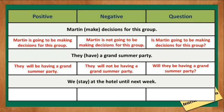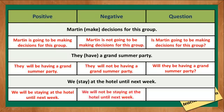The last one: 'We stay at the hotel until next week.' The verb is 'stay.' The correct positive statement is: 'We will be staying at the hotel until next week.' The negative statement is: 'We will not be staying at the hotel until next week.' And the question is: 'Will we be staying at the hotel until next week?' Did you get it right?